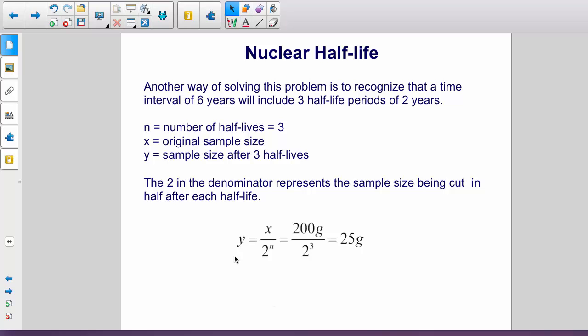So, we have the final sample size is the original sample size divided by two to the n, that is, halved n times. So, in this particular case, where we have six years, three half-lives, we're going to use y equals the original sample size divided by two to the third, or we end up with 25 grams.